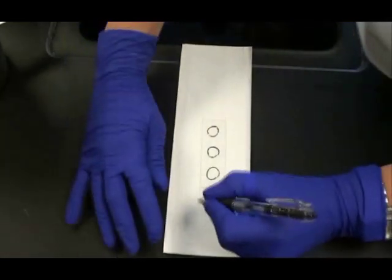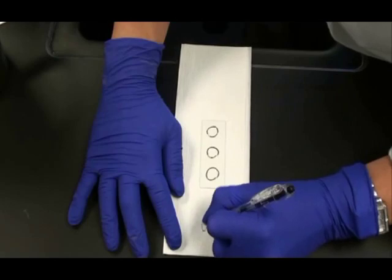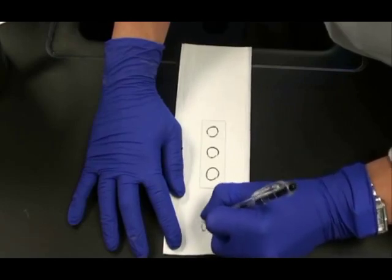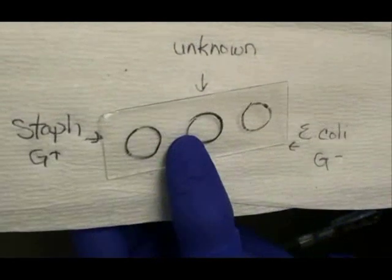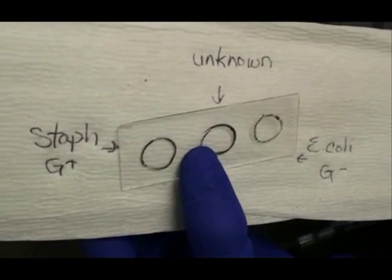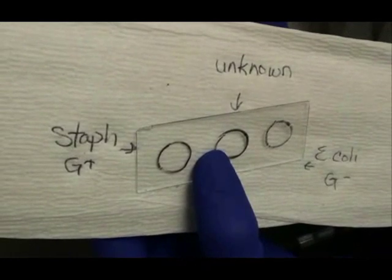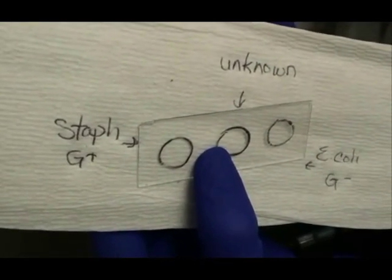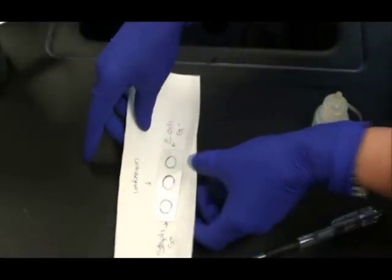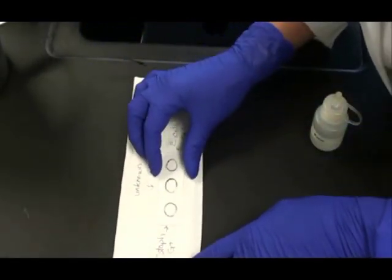It can be helpful to put your slide on a paper towel and label that paper towel with the names of the bacterial samples that you're going to put on it. It helps you keep track of what you're doing. So we're going to have our Gram positive control Staph on the left, our Gram negative E. coli control on the right, and our unknown is in the center.